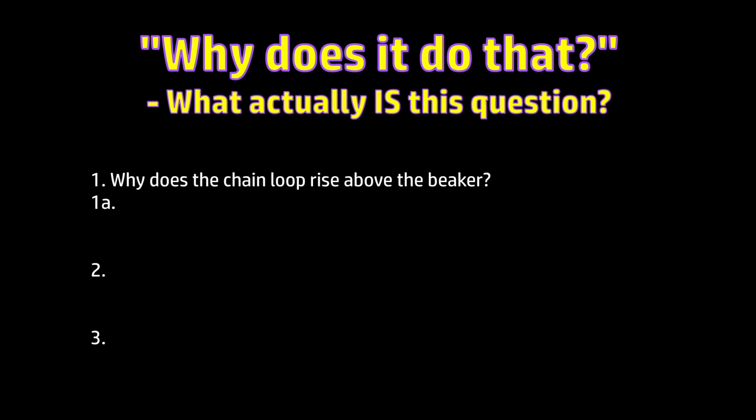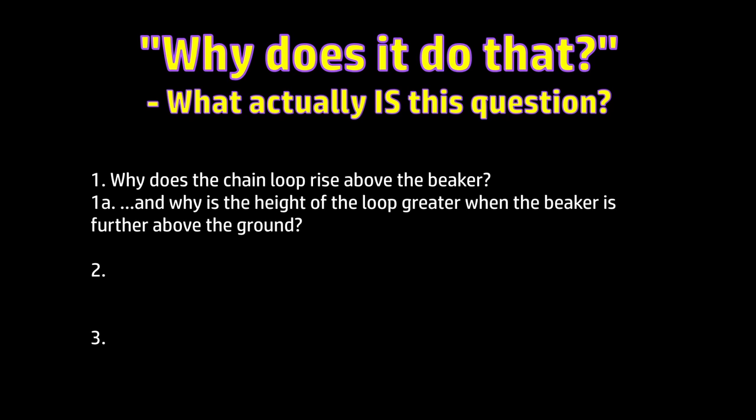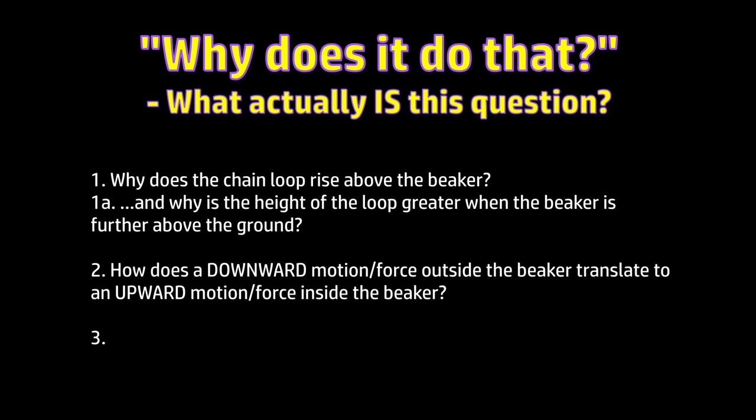Question one is why does the loop rise above the beaker? And then kind of 1A is why is the height of the loop greater when the beaker is further above the ground? Question two, how does a downward motion or force outside the beaker translate to an upward motion or force inside? And thirdly, I think this is the one everybody's really hung up on, is why does this happen with this particular type of chain material but not or not nearly so much with other types of chain?